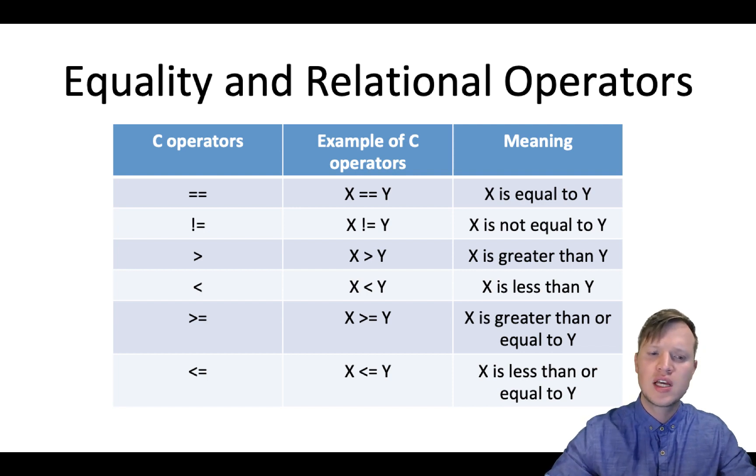Then we get the standard bigger than and smaller than signs as well as the bigger than and equal and smaller than and equal. Please note that it's first the bigger than and then the equal sign with the bigger than and equal and the same for the smaller than and equal. First the smaller than sign and then the equal in C programming.